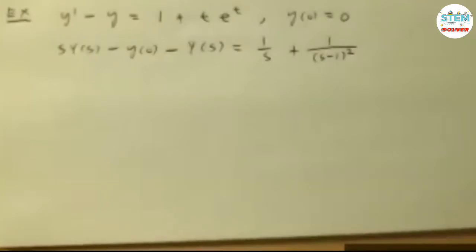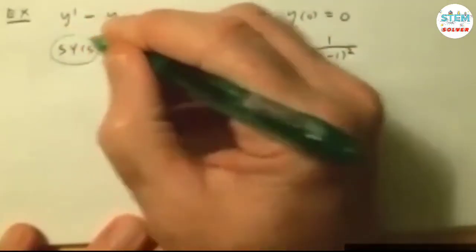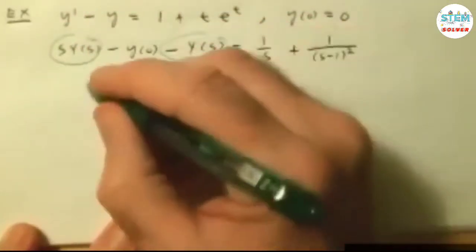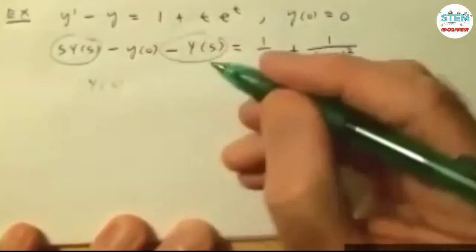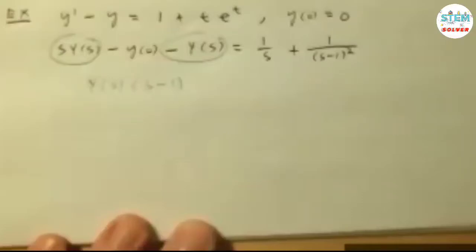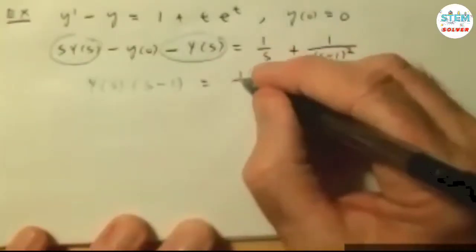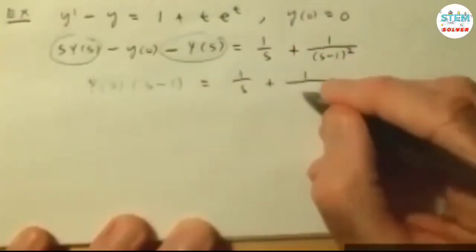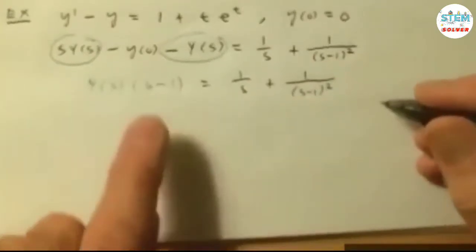Alright, so from there, let's solve for Y of s. What I usually do is this: I look for capital Y of s's, factor it out, we'll be left with s minus 1, and then I have the 1 over s plus 1 over s minus 1 squared.